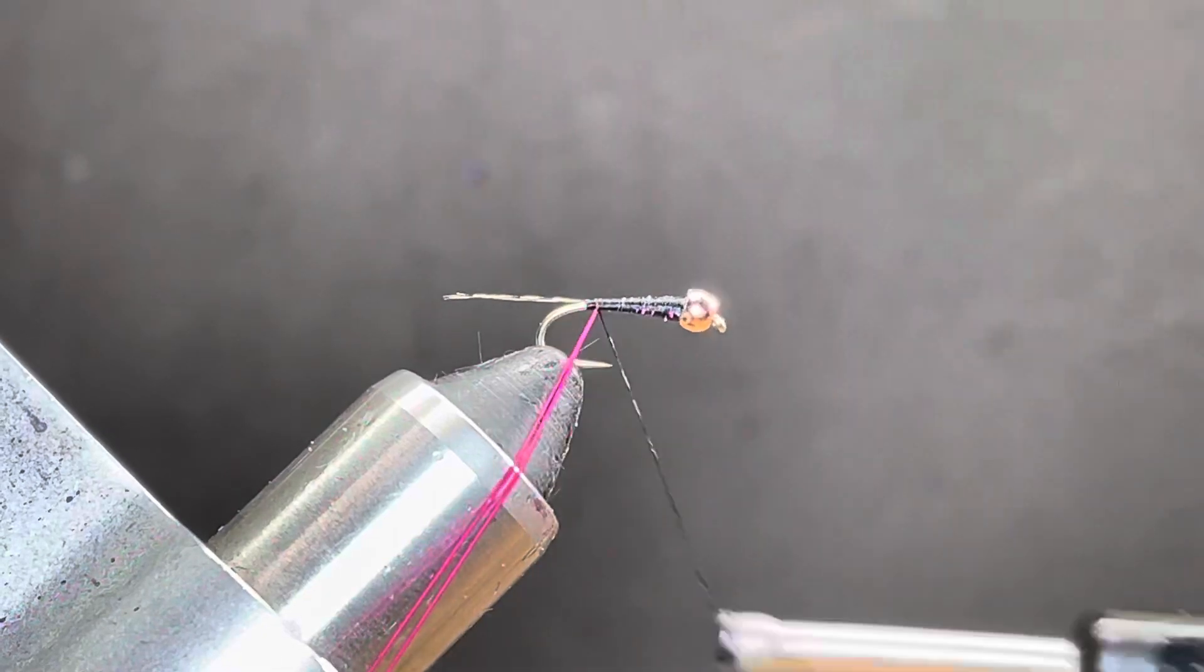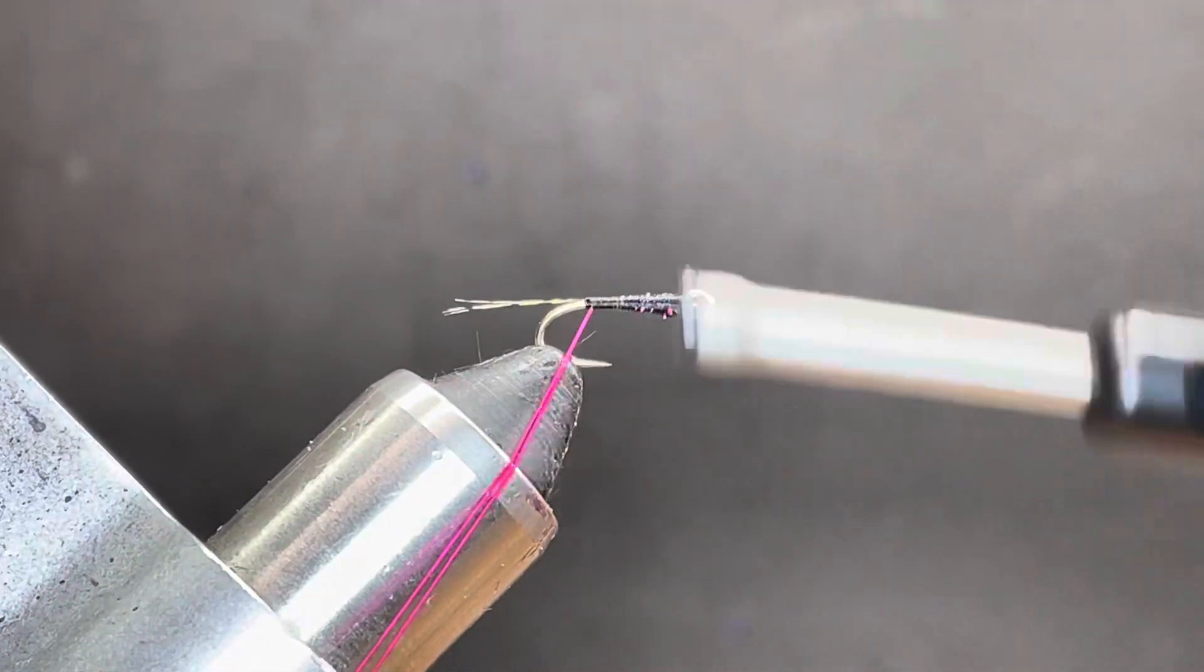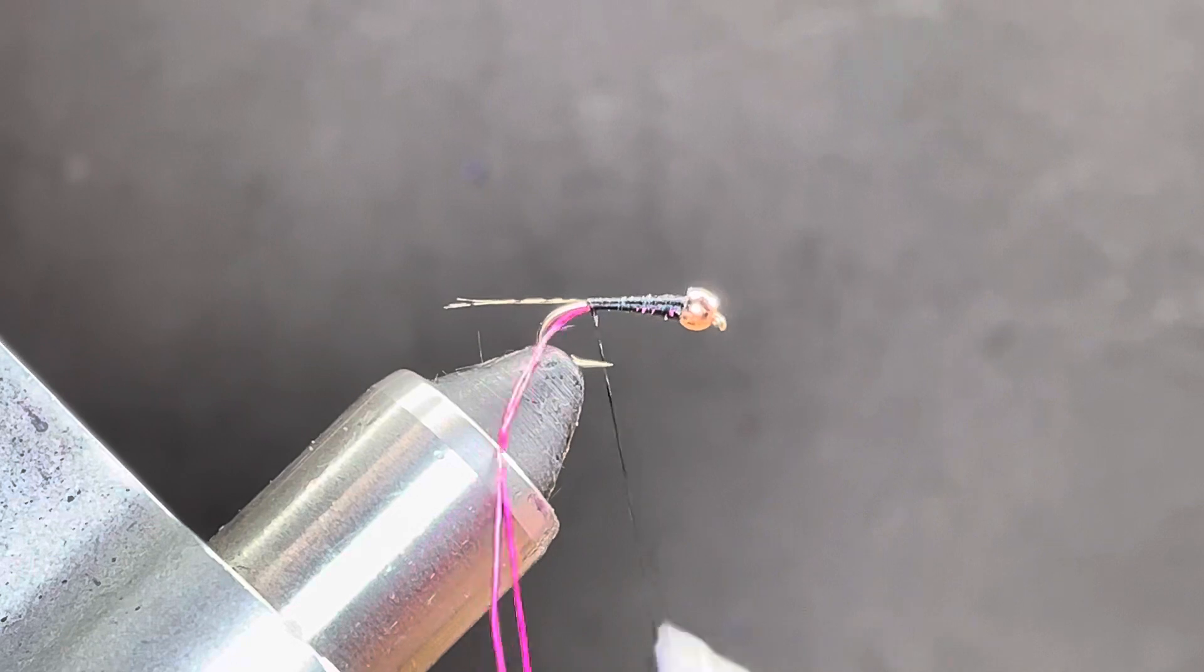Nice little cone or funnel shape. Tie this in on the underside. I always like tying my ribs in on the underside.